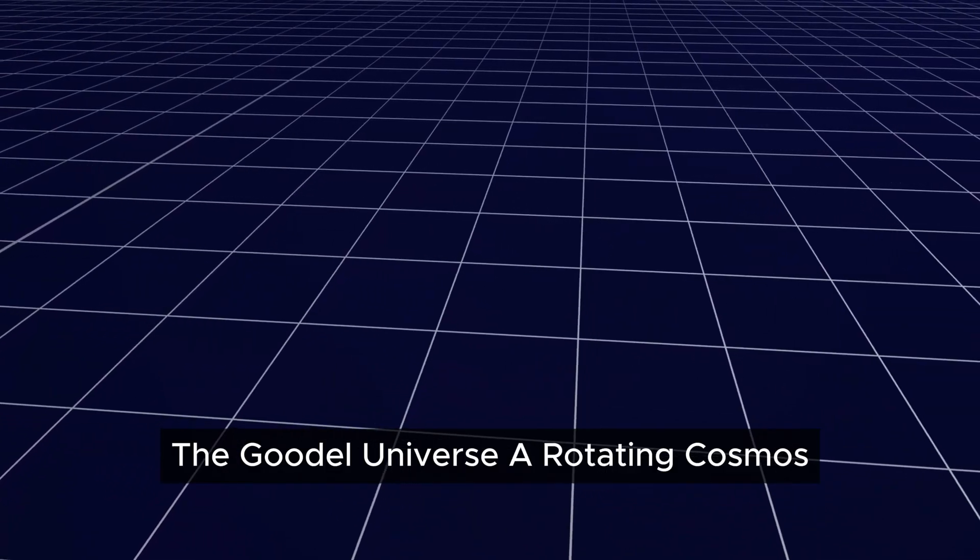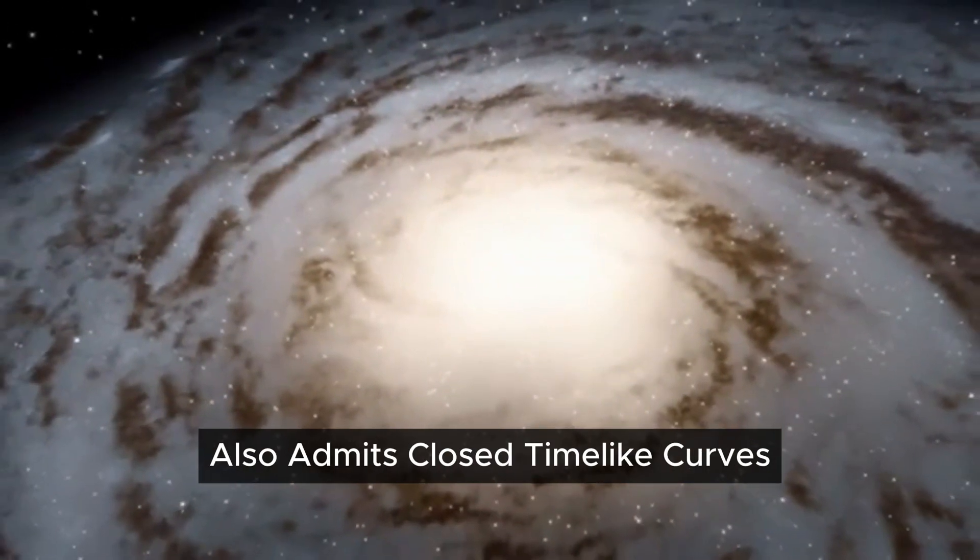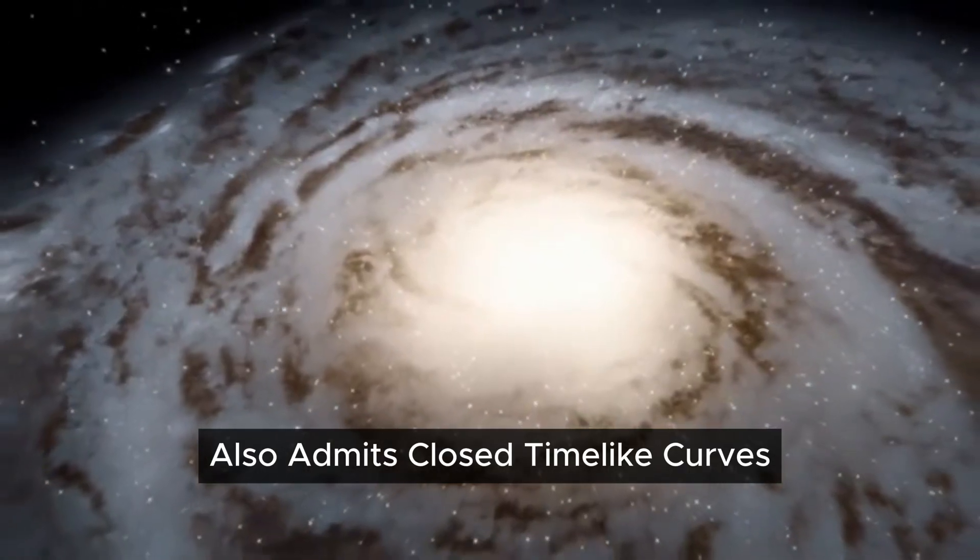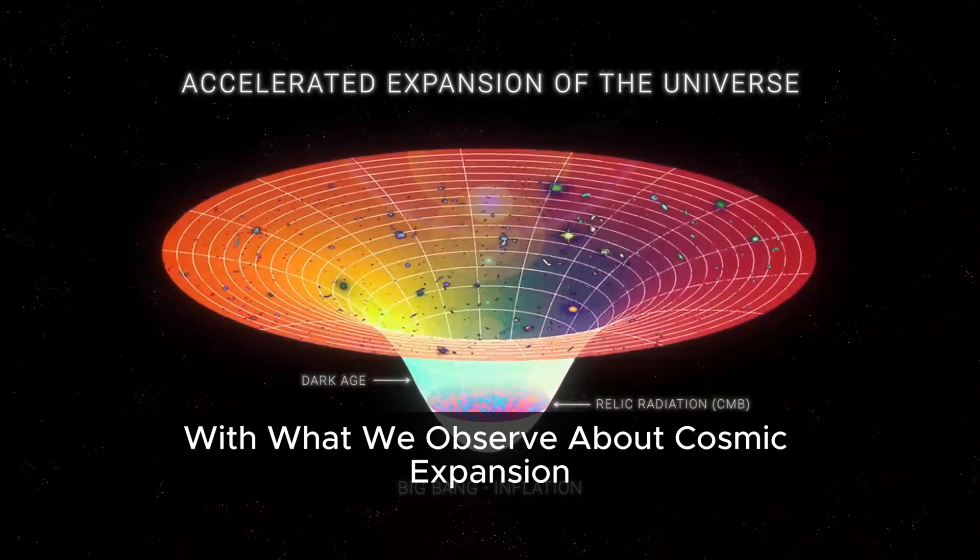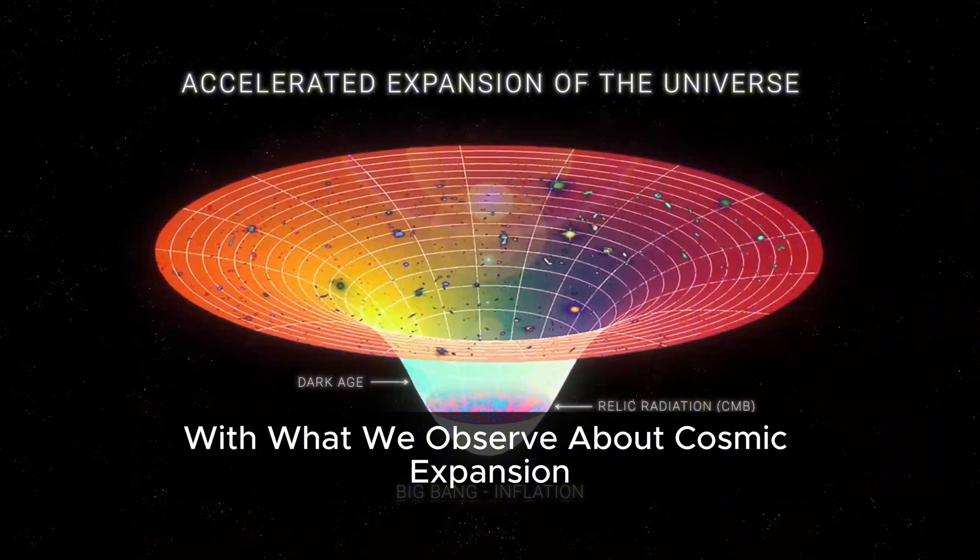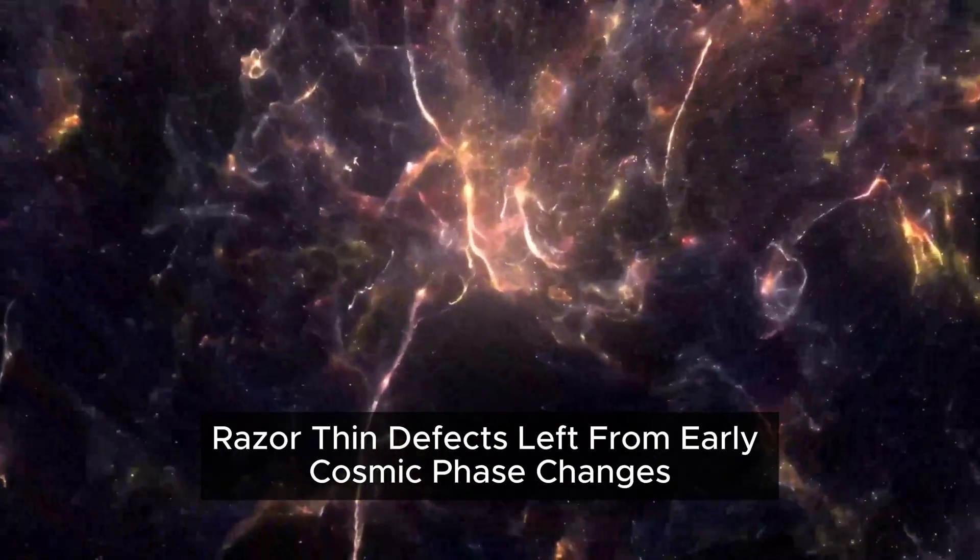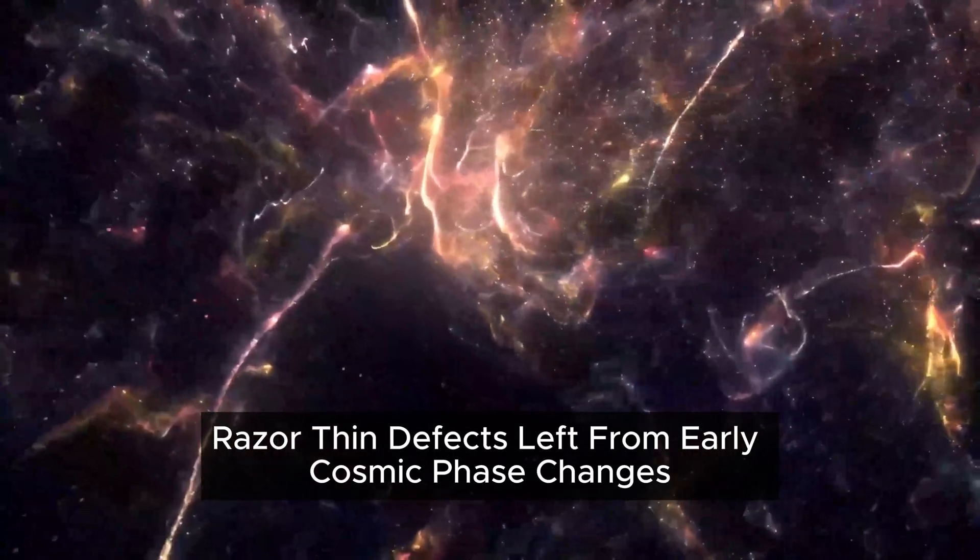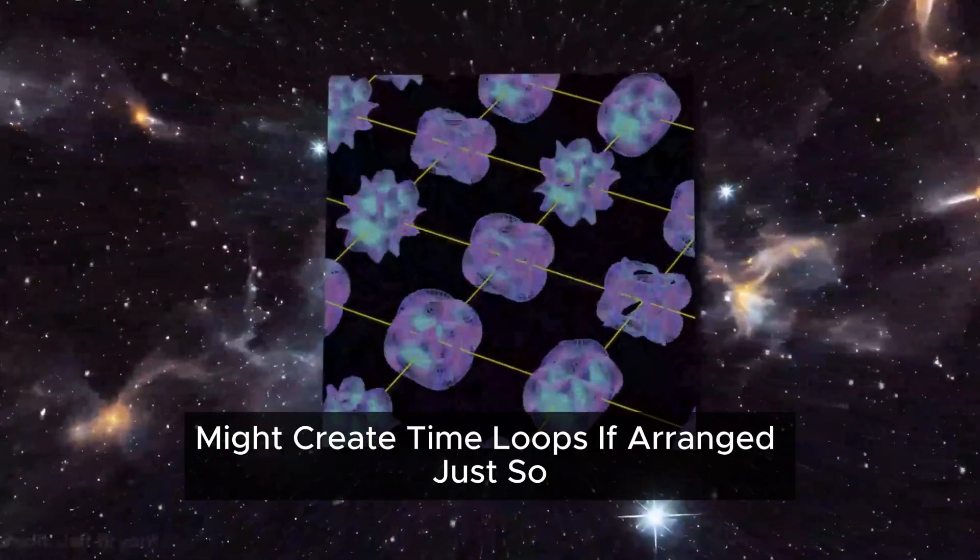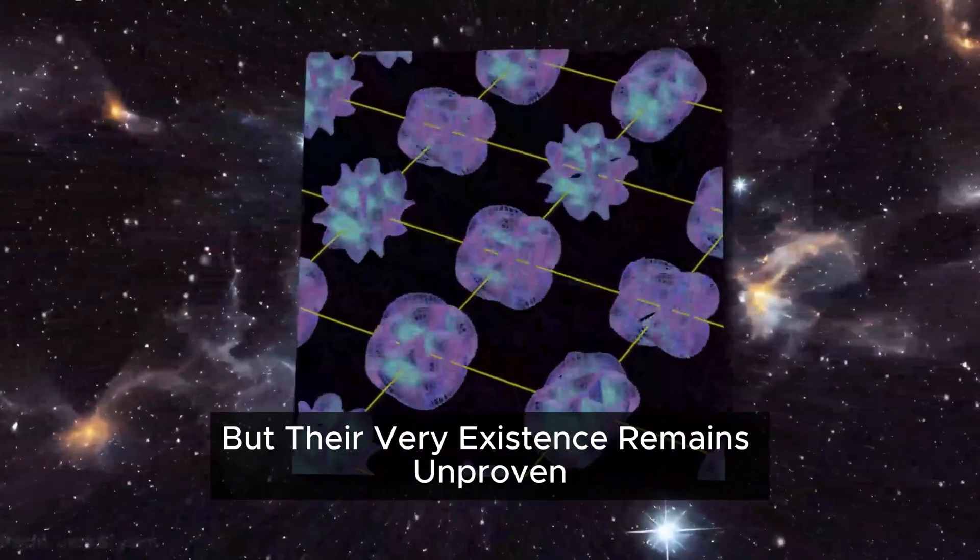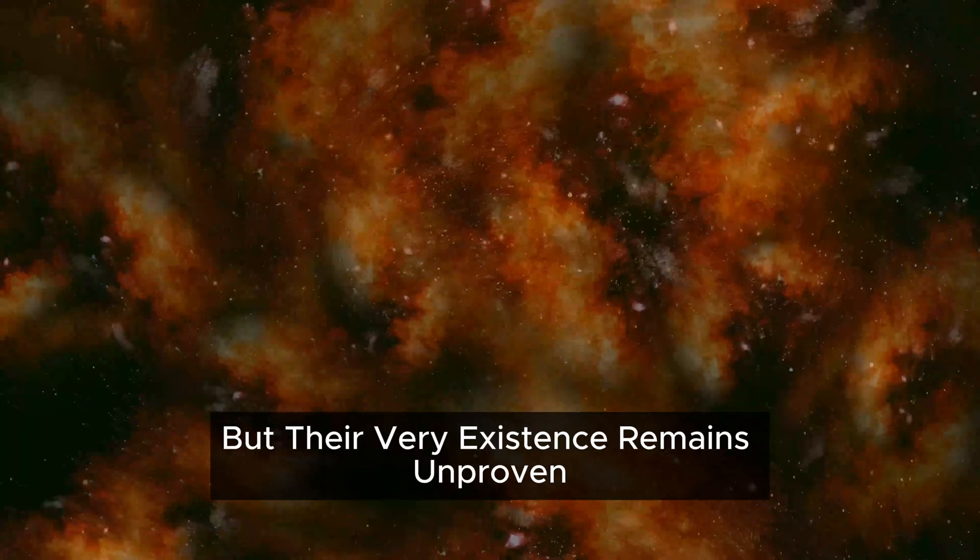The Gödel universe, a rotating cosmos, also admits closed time-like curves, but it conflicts with what we observe about cosmic expansion. Hypothetical cosmic strings, razor-thin defects left from early cosmic phase changes, might create time loops if arranged just so, but their very existence remains unproven.